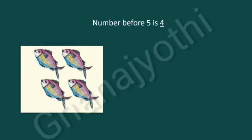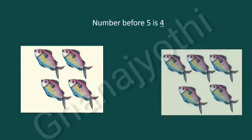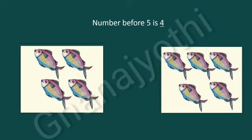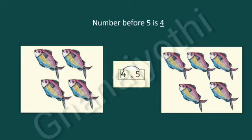Let us see some examples for before number. The number before 5 is... Look at this picture. In the first picture, we have 4 fishes, and in the second picture, we have 5 fishes. The number before 5 is 1 less than the given number. So, the given number is 5, and 1 less is 4. The number before 5 is 4.